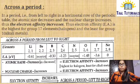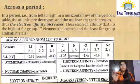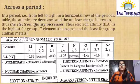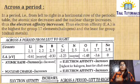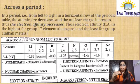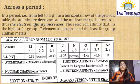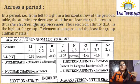Next comes across a period — moving from left to right in a periodic table. In a period, from left to right in the horizontal row of the periodic table, the atomic size is decreasing and therefore nuclear charge is increasing. As nuclear charge increases, electron affinity also increases. Electron affinity is highest for Group 17, that is halogens.